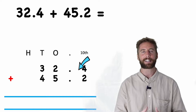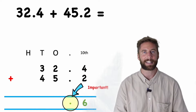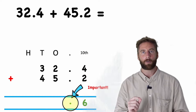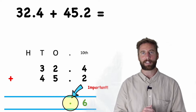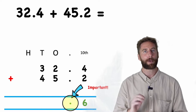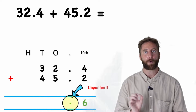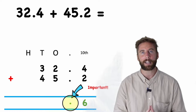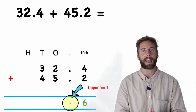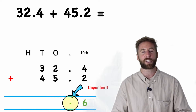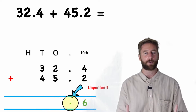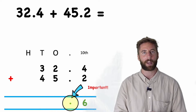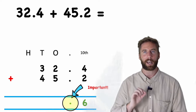Four tenths add two tenths equals six tenths. Now here's a really important detail — I'm going to make sure at this point I put my decimal point in. If I don't put my decimal, I could forget it and change the whole value of the number later. So it's really important I put that in now.